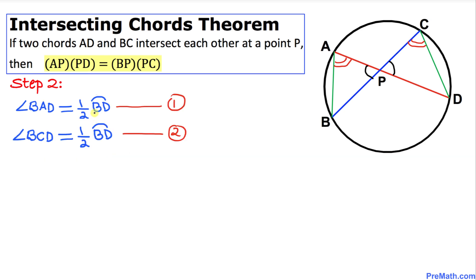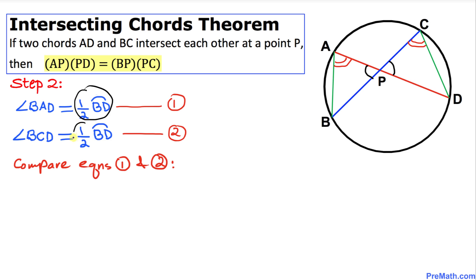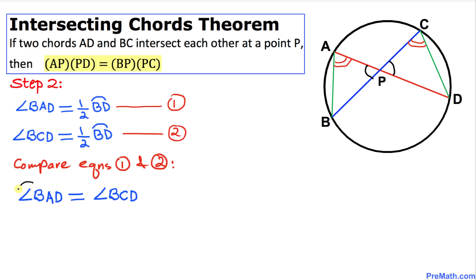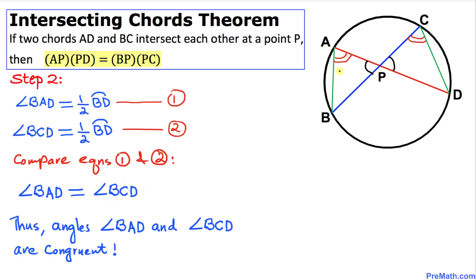Now let's compare these two equations. Since the right-hand sides of both equations are the same, we conclude that the left-hand sides are equal as well. Therefore, angle BAD equals angle BCD, meaning these two angles are congruent.